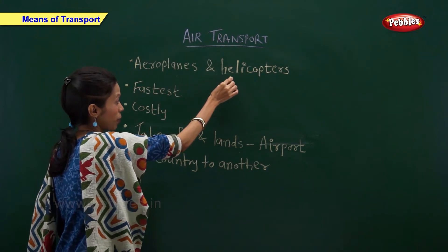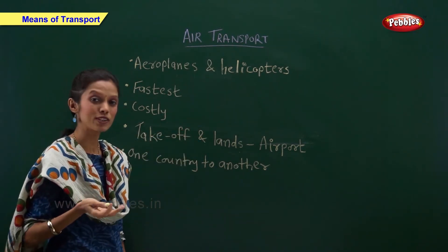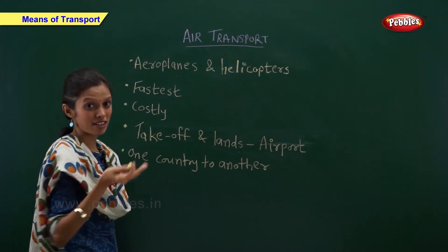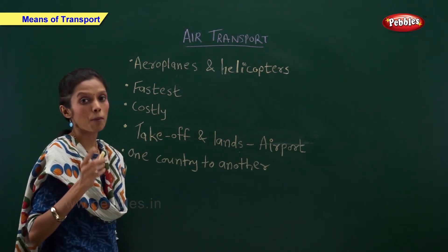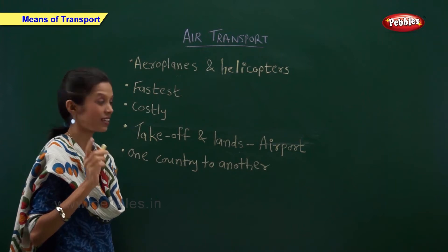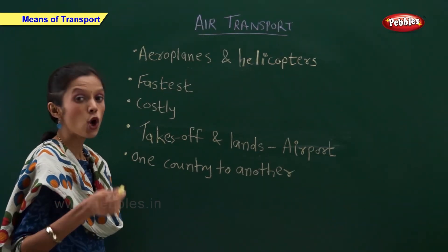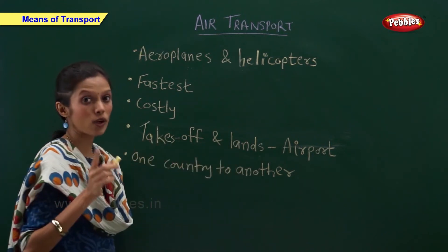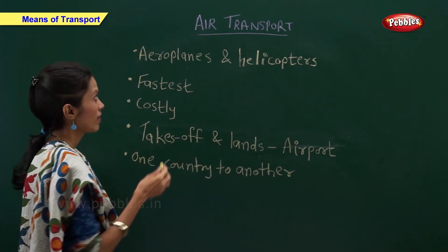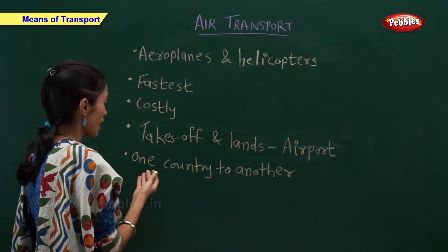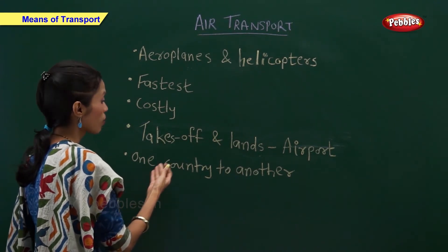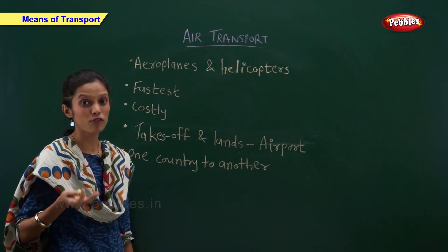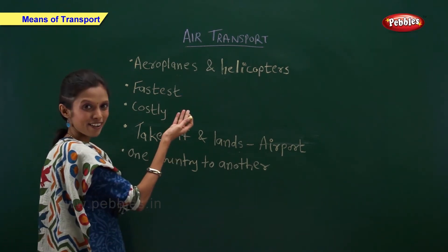Aeroplanes and helicopters are the examples of air transport. They are the fastest means of transport but they can be costly. An aeroplane always takes off and lands only at an airport. Air transport can be used to travel from one country to another. Now let us have a look at some of the examples of air transport.